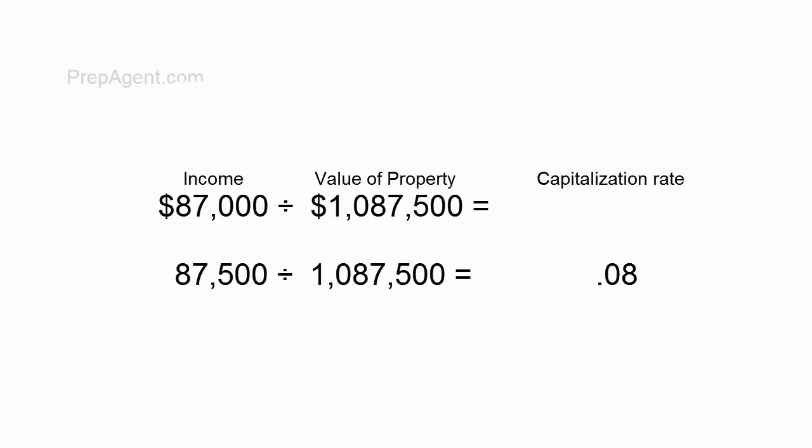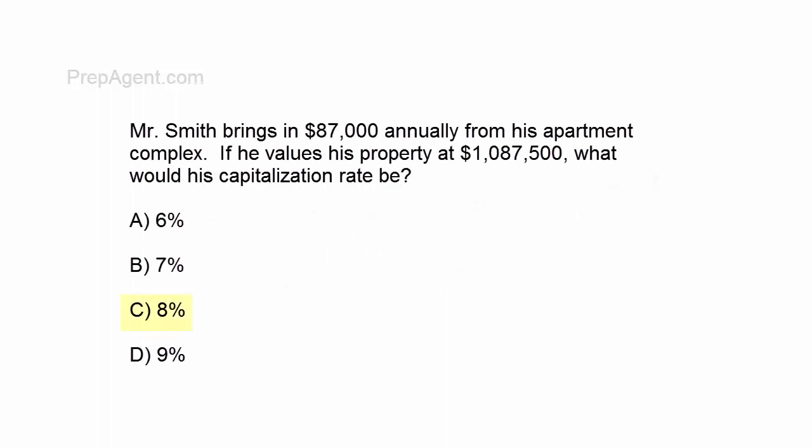On your calculator, 0.08 — you move the decimal point over by 2 and you get 8%. That is the capitalization rate based on the $87,000 annual income and the $1,087,500 value.